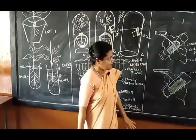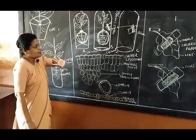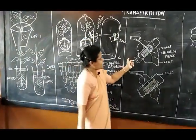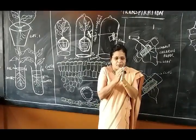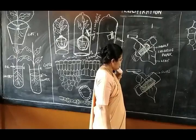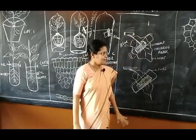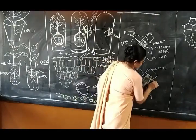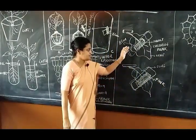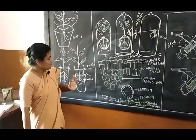Experiment 4: Cobalt chloride paper is sandwiched between two slides, clipped onto a leaf, and kept in sunlight for two to three hours. The cobalt chloride paper, originally blue, turns pink because transpiration has taken place and the moisture released is absorbed by the paper.